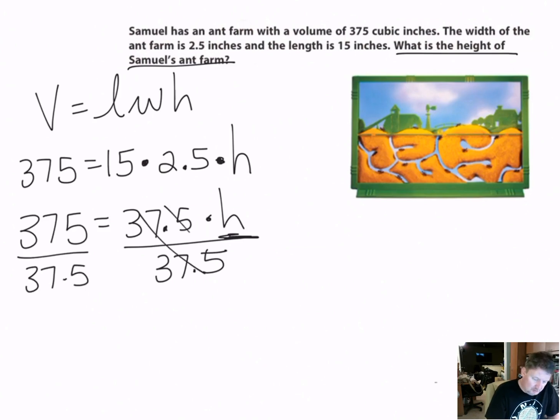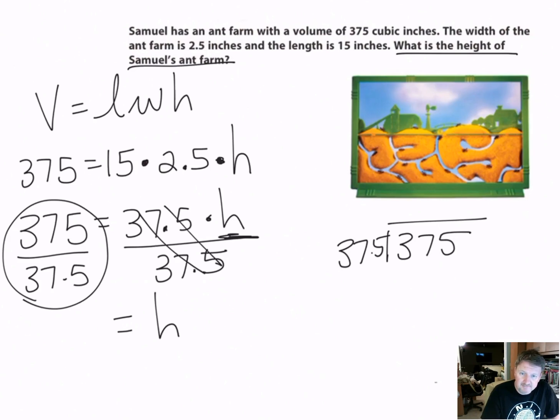I divide by 37.5, and I have to do the same thing over here. These two simplify to one, and then one times h is simply h. But now I've got to work with 375 divided by 37.5.